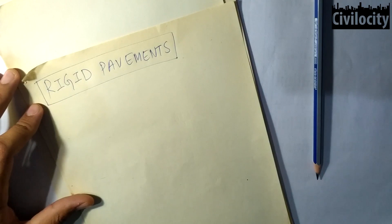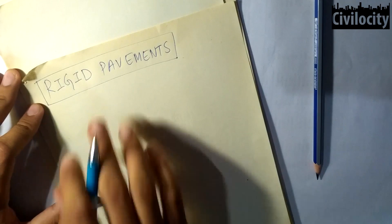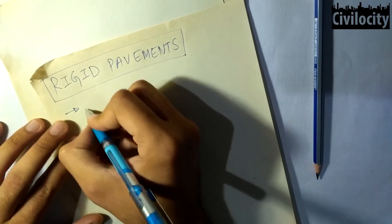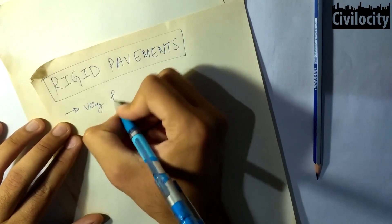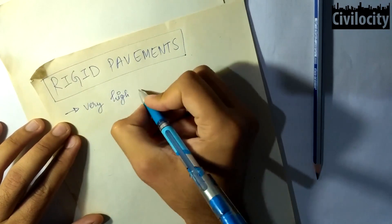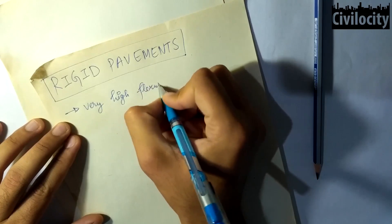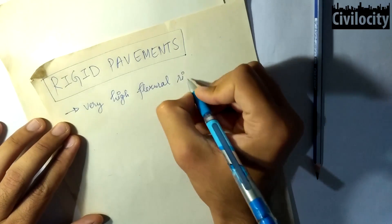In this lecture we're not going into the depths but I'll try to give you short and point-to-point information regarding rigid pavements. So what are rigid pavements? Rigid pavements are those top surfaces which are made up of Portland cement concrete and possess very high flexural strength or flexural rigidity.